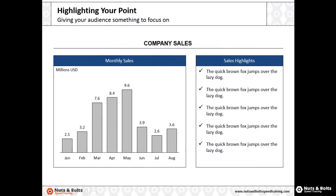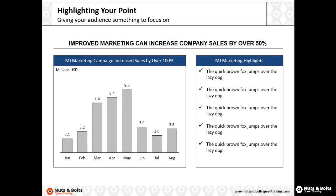First, here's a generic layout with a graph that basically leaves it up to you to figure out what the point of the slide is — this is exactly what you don't want to do. To highlight your point, you first want to start with your titles. Here the point is that we can increase company sales by over 50%, based on the results of our MJ marketing campaign, where we increased sales by over 100% in our graph.